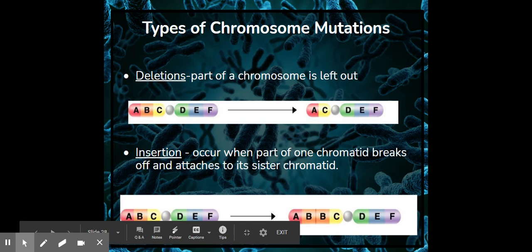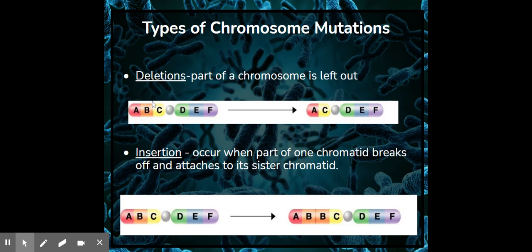The first thing we're going to talk about is the deletion. In the deletion, part of the chromosome is left out. It's deleted. If you notice, this one is A, B, C, T, E, F. This one is A, C, D, E, F. So the B, or whatever that codes for, would not be on that particular chromosome. That's called a deletion.